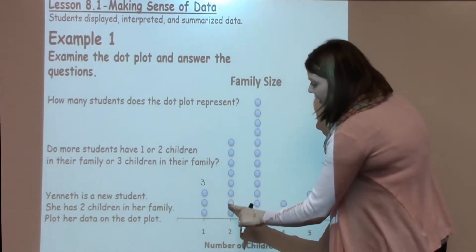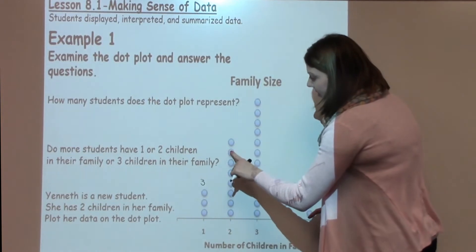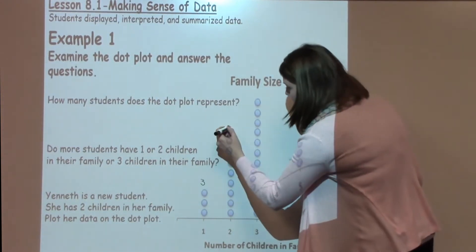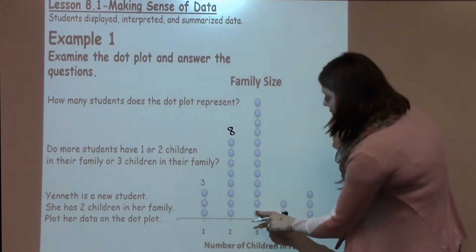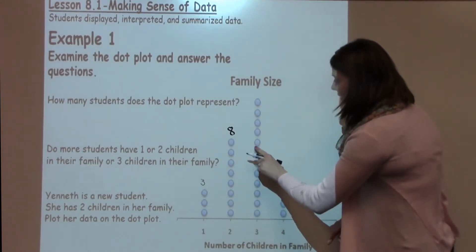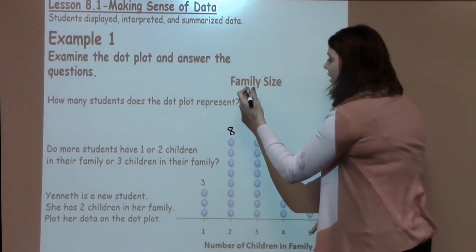For two students in a family, I've got one, two, three, four, five, six, seven, eight. I've got eight students in that category. I've got one, two, three, four, five, six, seven, eight, nine, ten, eleven, twelve students here.